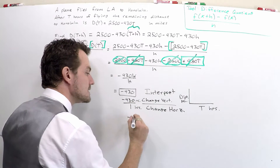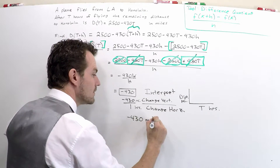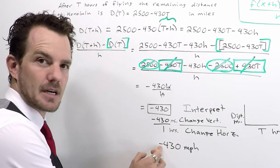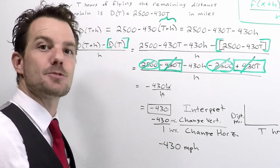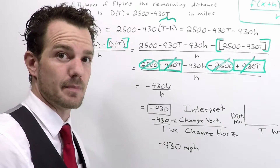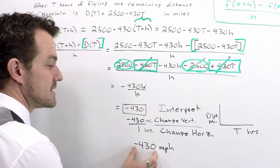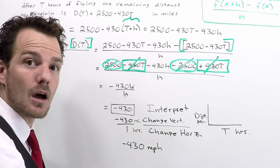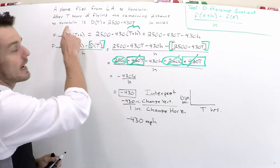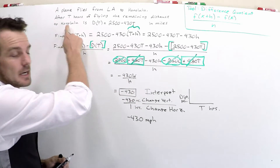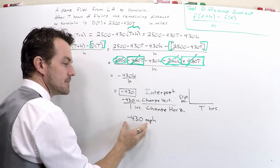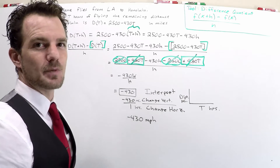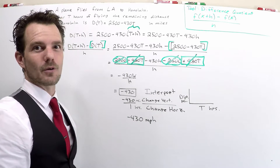So this represents speed. The only issue in interpreting this is that the minus sign has a special significance — the minus just means that the distance we were measuring in miles is decreasing. Why? Because we were flying towards Honolulu. So we're traveling at 430 miles per hour toward Honolulu, and we know it's negative because we keep getting closer.